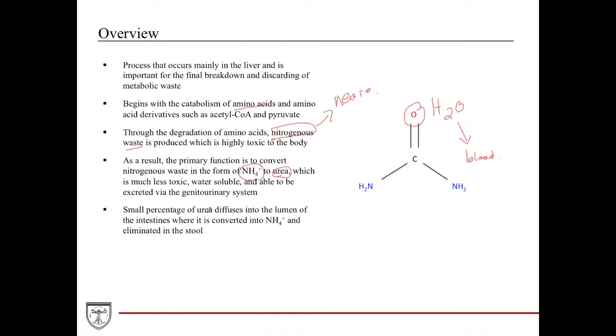You can use a small percentage of urea and alter it in a way in which it can be eliminated through the stool. However, the main driver for all of the waste excretion is via the genital urinary system, especially when we're talking about nitrogenous waste.